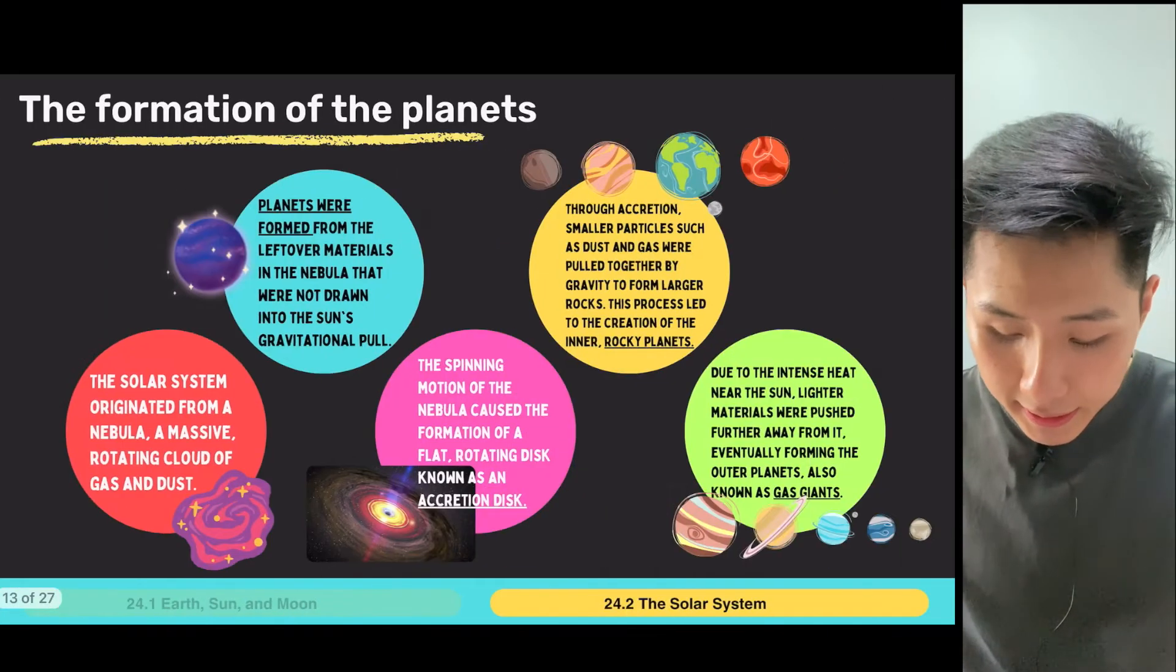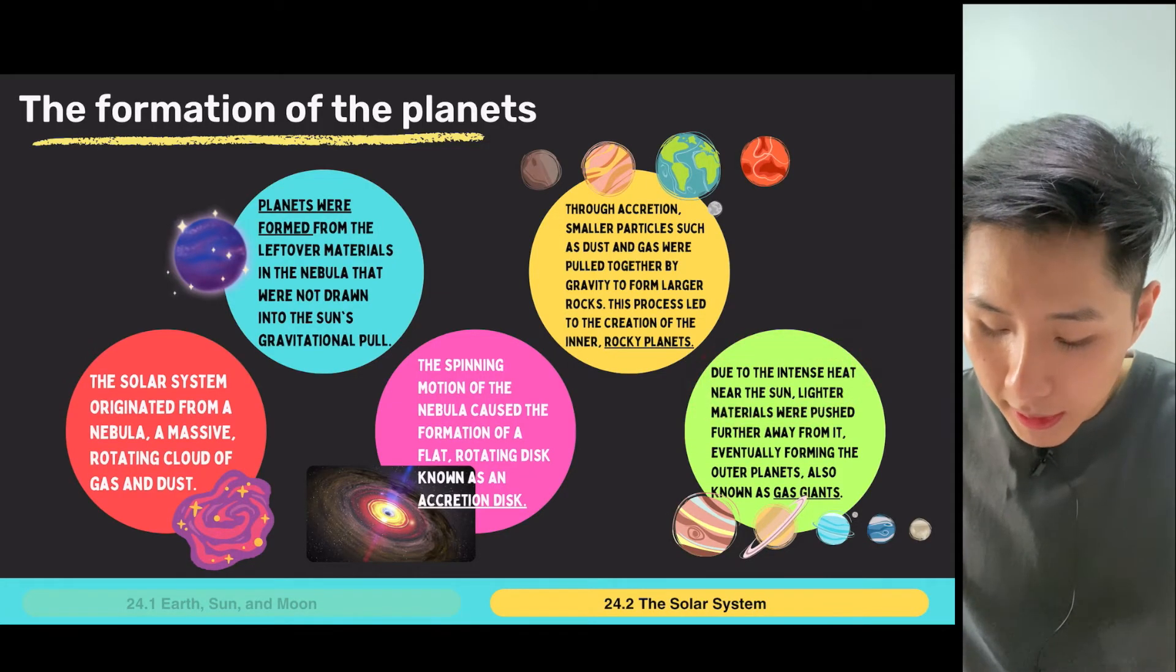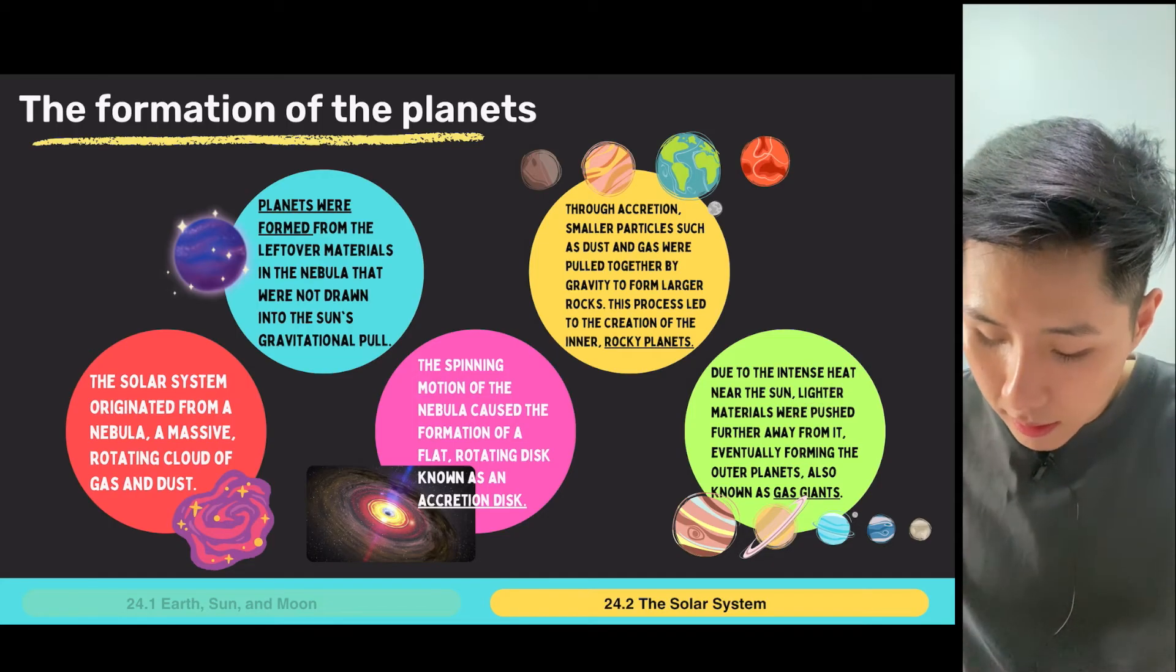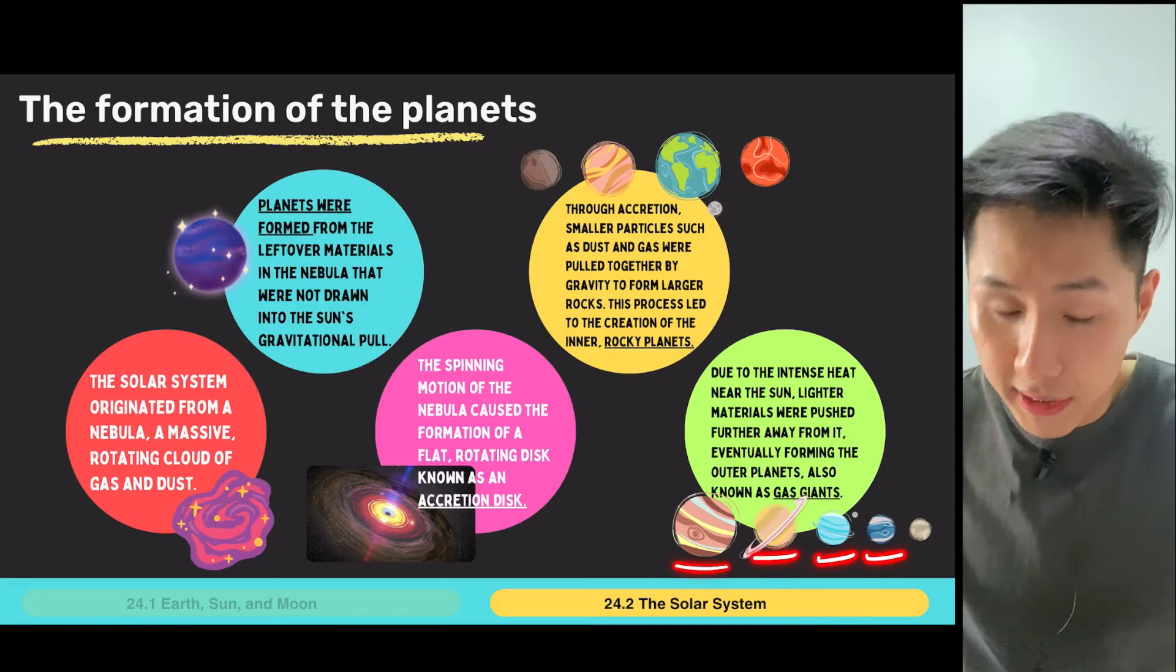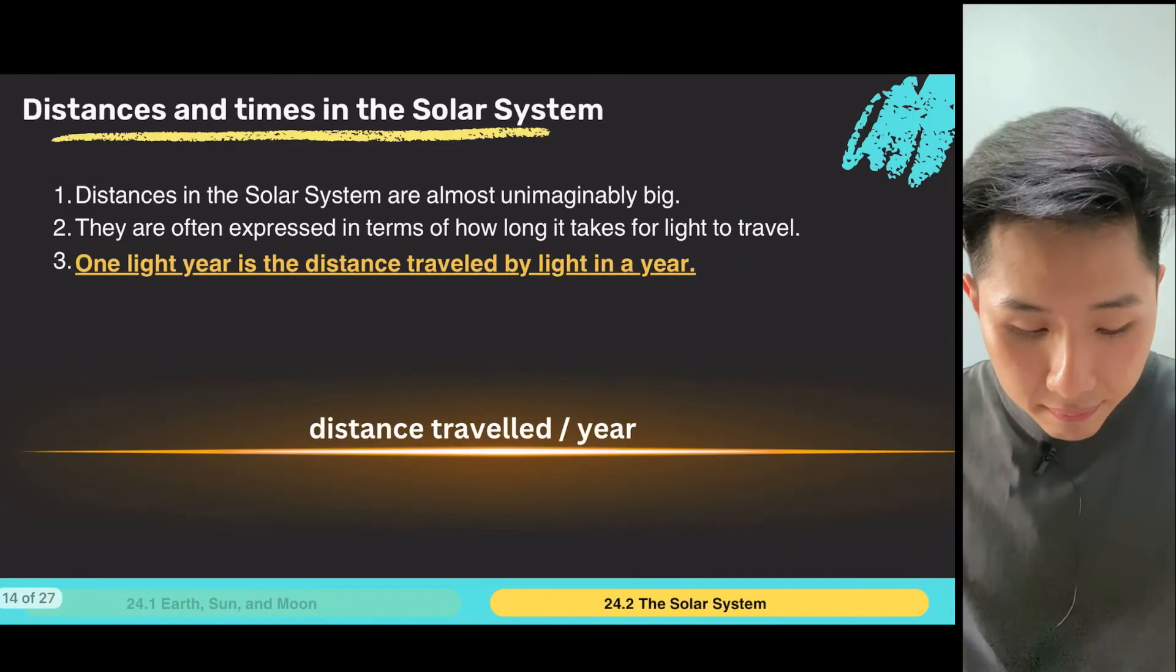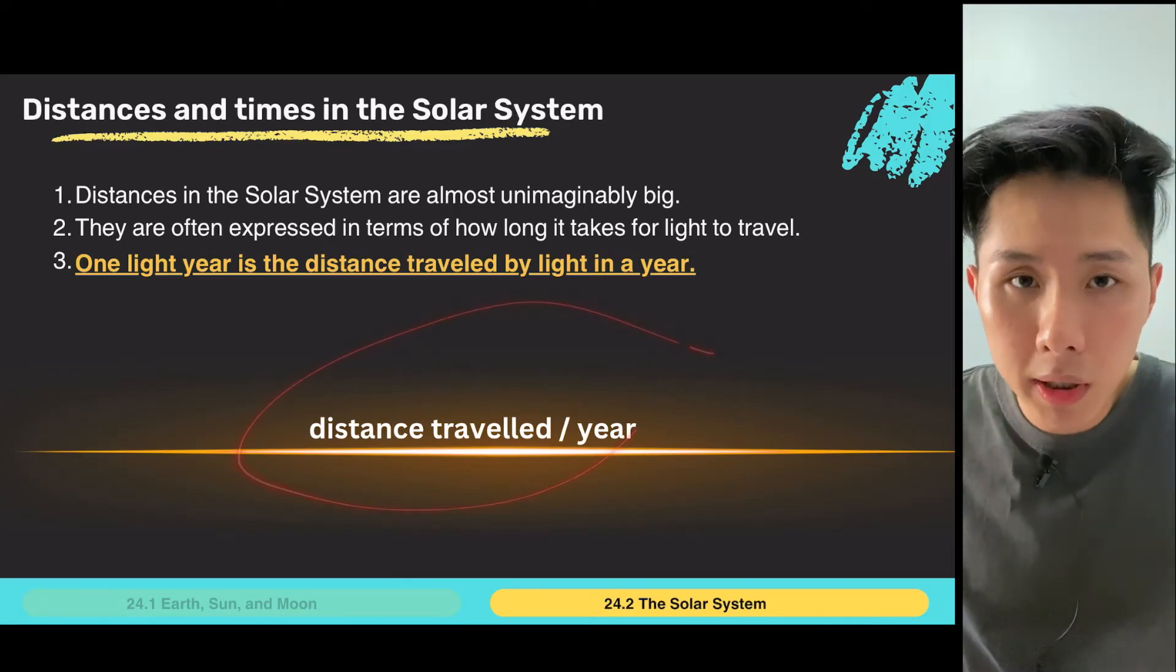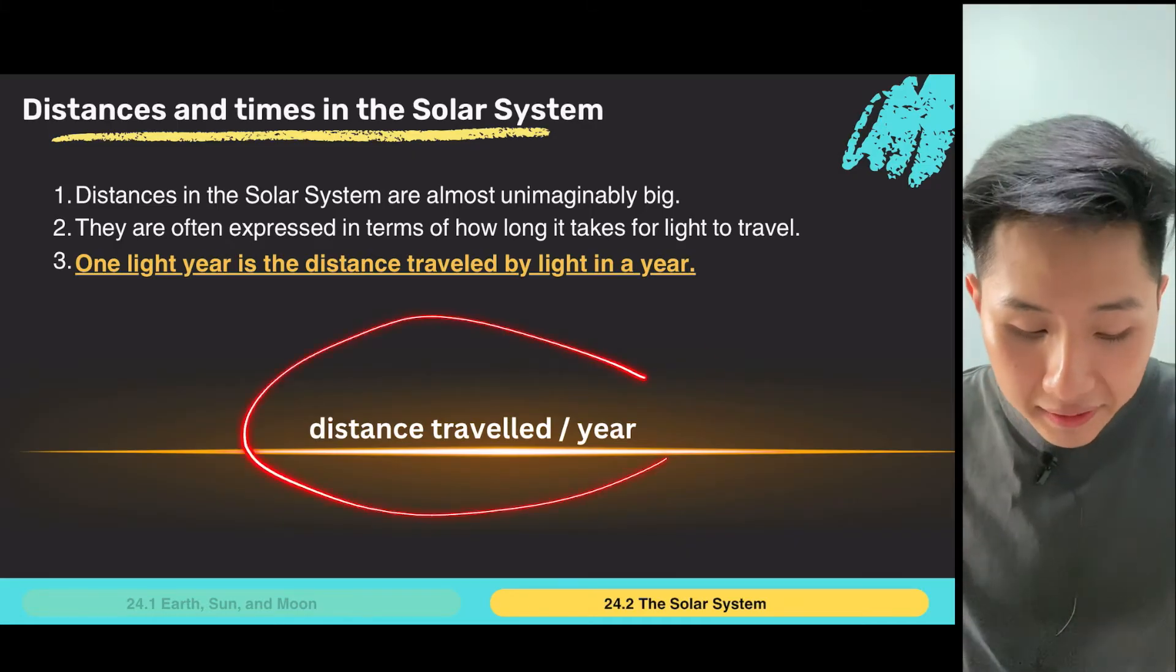So as more and more particles are being attracted to this rock, they form what we have now today, the rocky planets. And as the other elements, lighter materials that are pulled further away from the sun, they eventually form the outer planets known as the gas giants, which are all these planets here. Alright, so that's how planets are formed in a very summarized way. So in solar system, we don't, of course, we use kilometers, SI unit to describe distance, but sometimes for convenience sake, we also use the term light year.